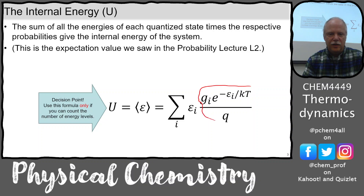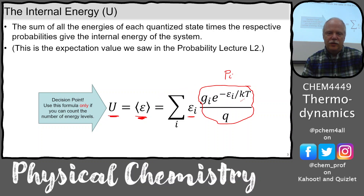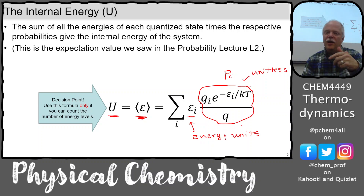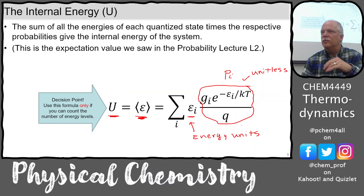This piece right here is the probability of being in level i. So in terms of the expectation value for the energy, which is also the internal energy, it's just those individual energies times the probability of being in each state. This piece is unitless, so your energy units come from the energy levels themselves. Whatever energy units you have in your energy level diagram are the final units. You may want to convert those using physical constants: Planck's constant, speed of light, and Boltzmann's constant.